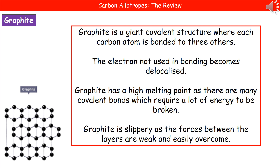The second allotrope of carbon we're going to look at is graphite. If you look at the picture in the bottom left, graphite looks like a load of sheets stacked up. Again, graphite is a giant covalent structure where each carbon atom is bonded to three others. That's the key difference between diamond and graphite — diamond is bonded to four others, graphite to three. That means we've got an electron not being used in bonding, and that electron becomes delocalized.